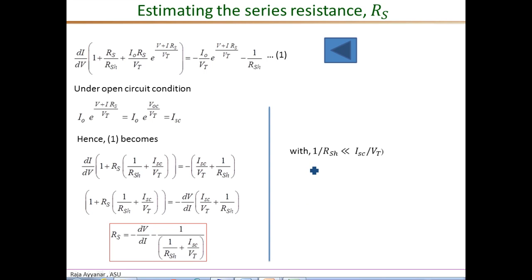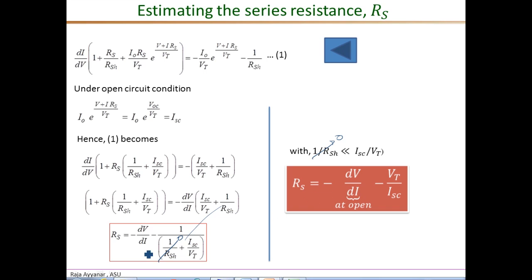We make a further simplifying assumption: 1/R_shunt is much smaller than I_SC/V_T. This is reasonable because R_shunt is usually several hundred ohms, so 1/R_shunt is negligibly small compared to I_SC/V_T. Neglecting that term leads to the final expression for the series resistance: R_S equals minus dV/dI at open circuit minus V_T/I_SC. So the series resistance is the inverse of the slope of the IV curve at open circuit minus the thermal voltage divided by I_SC.